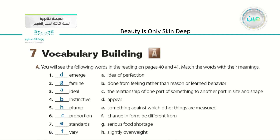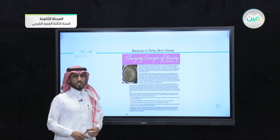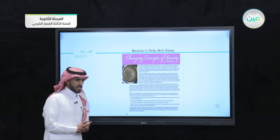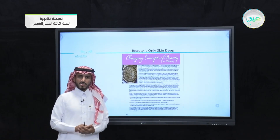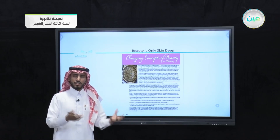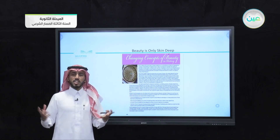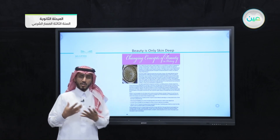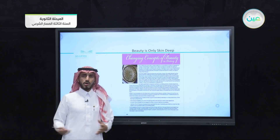The answers of these words are as shown on the slide. After that, we started reading the essay together. The title of the essay is Changing Concepts of Beauty in History. The word concept means the idea or notion behind something, so it refers to changing perspectives of people toward beauty throughout history.